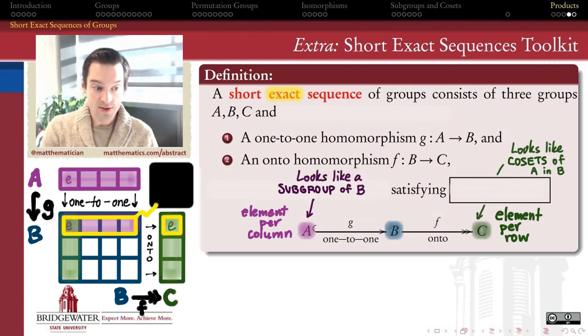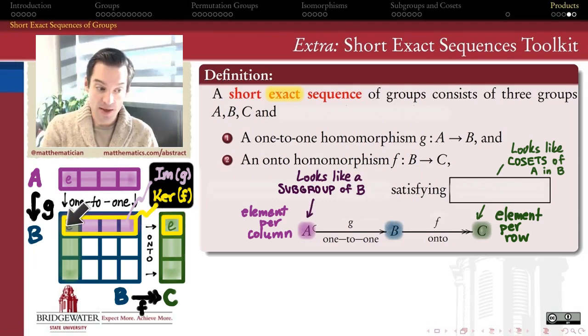To say that this sequence is exact means that there's a relationship between the kernel of this function F, the function from B to C, and the kernel, remember, by definition, is the set of everything in B which gets sent to the identity in C.